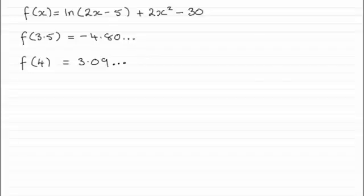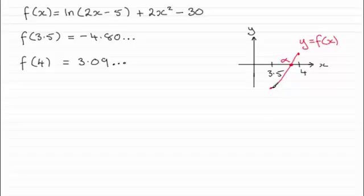So if you were to sketch the graph, not that you have to, but what we've got here is that for 3.5 you can see would have a negative value and when x is 4 you'd have a positive value. So assuming there's no breaks in the curve, it's continuous over this interval, then there must be a root alpha in that interval.